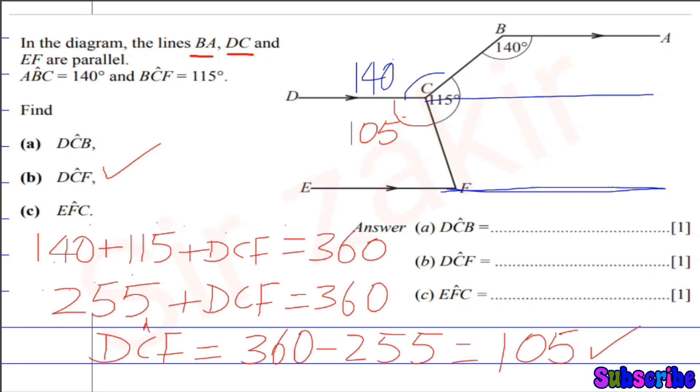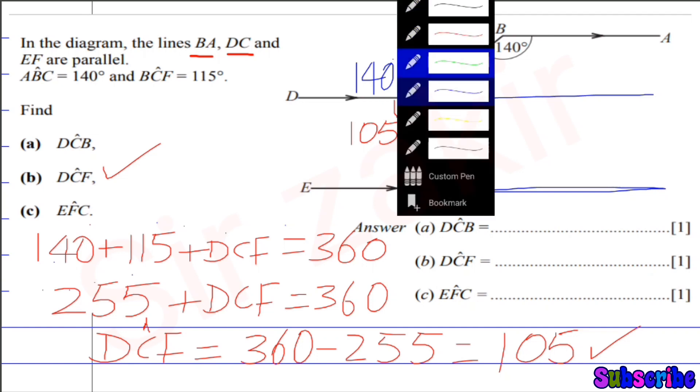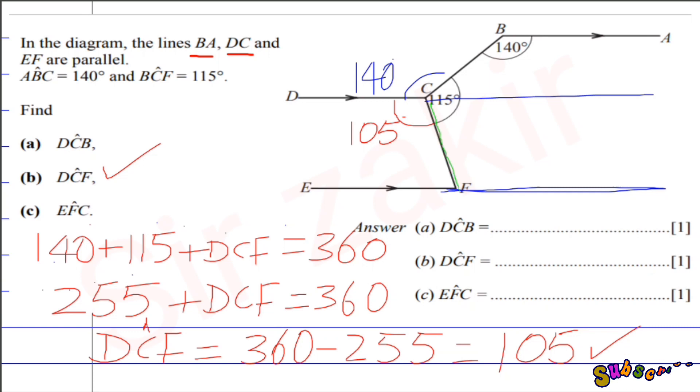And a transverse, which is of this green color, intersects them. Green color transverse intersects these two lines, DC and EF.